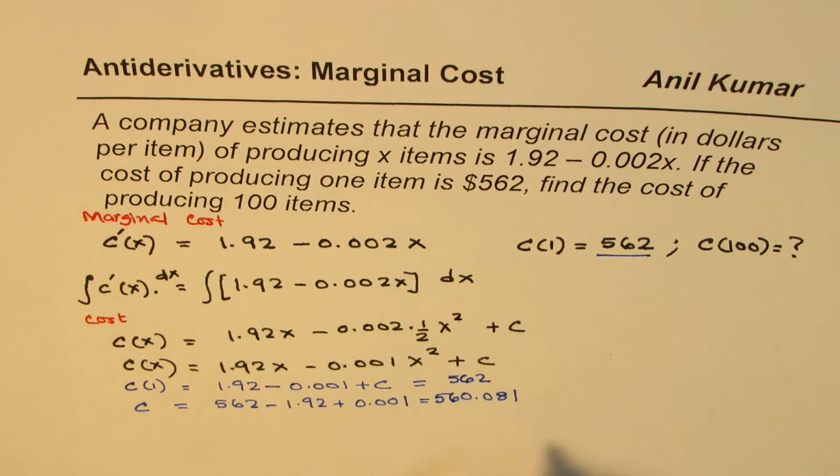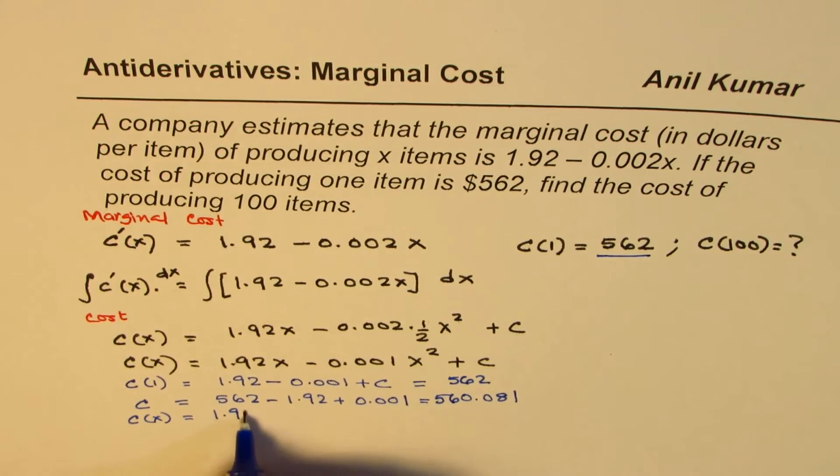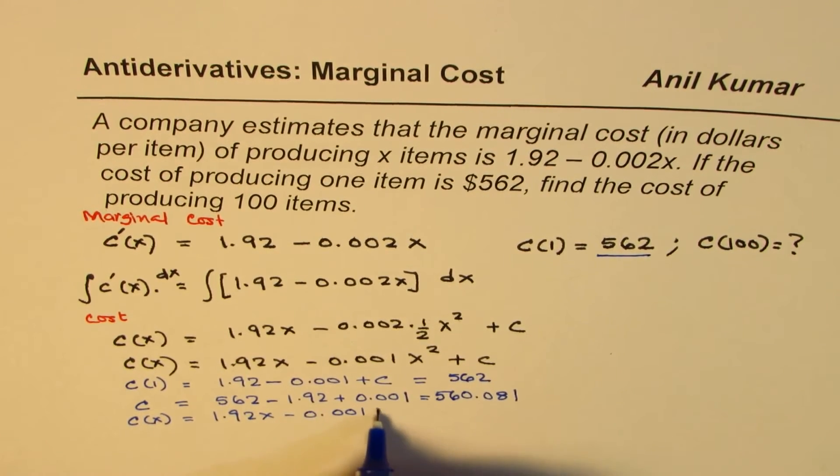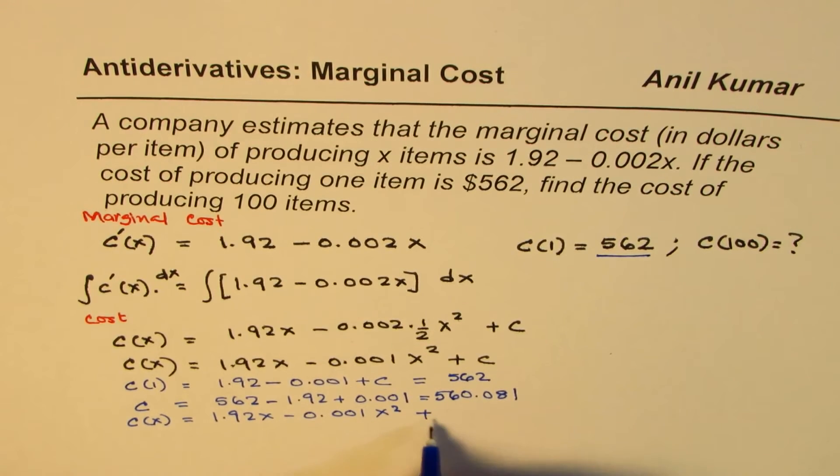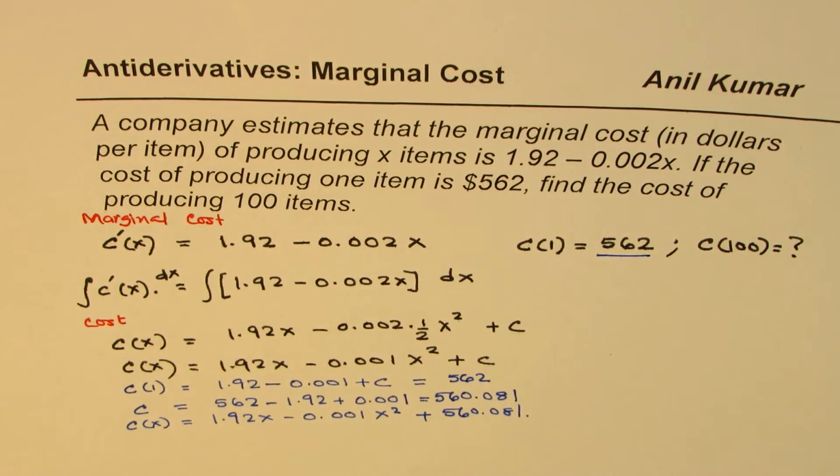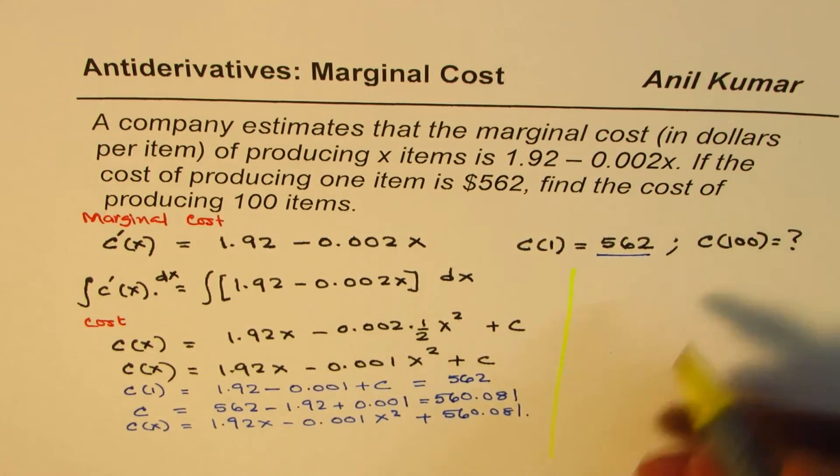So we have the function here, which is C(x) equals 1.92x minus 0.001x squared plus 560.081. That becomes the cost function for us. Now from this cost function we can find the cost of 100 items.